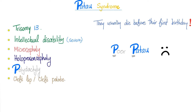The third disease is Patau syndrome — trisomy 13. There is severe intellectual disability. Microcephaly means the head is very small. Holoprosencephaly means the prosencephalon (forebrain) did not divide — there is no right and left hemisphere, just one sphere. That's why there is severe intellectual disability. There is also polydactyly (more than five fingers) and cleft lip and cleft palate.